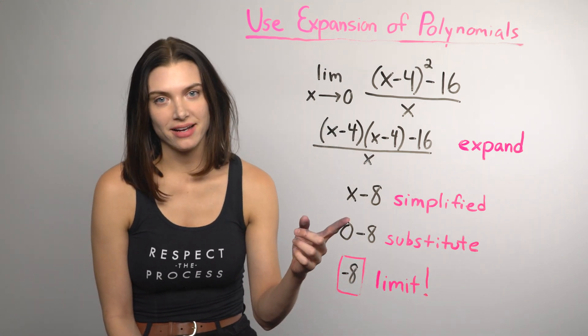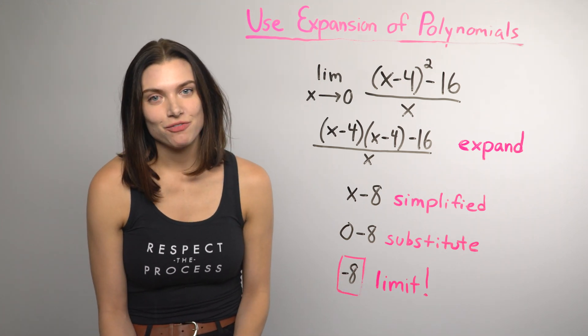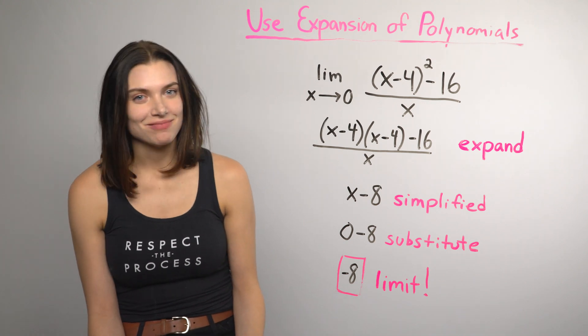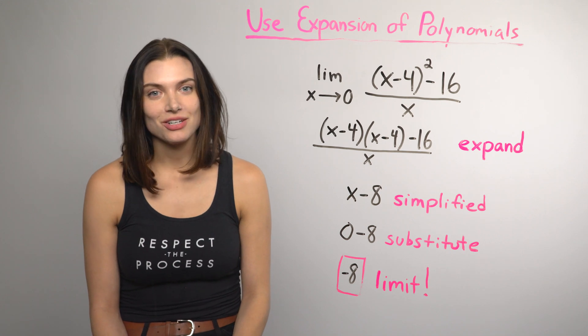Substituting a 0 in for x, the limit is simply negative 8. Using expansion of polynomials can be pretty easy. I wish it was always easy, but as you've probably guessed, there's one more way.